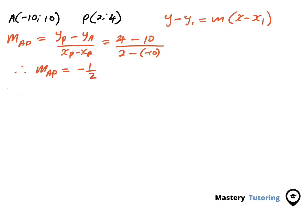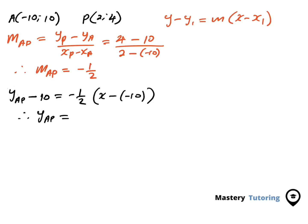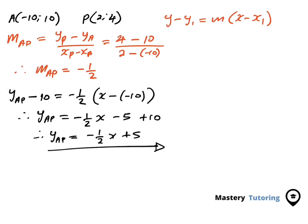Using point A = (-10, 10) and slope -1/2, we write: y - 10 = -1/2 times (x - (-10)). Expanding and simplifying — taking 10 to the other side and multiplying through — we get y = (1/2)x minus 5 plus 10. Therefore, the equation of line AP is y = (1/2)x + 5.